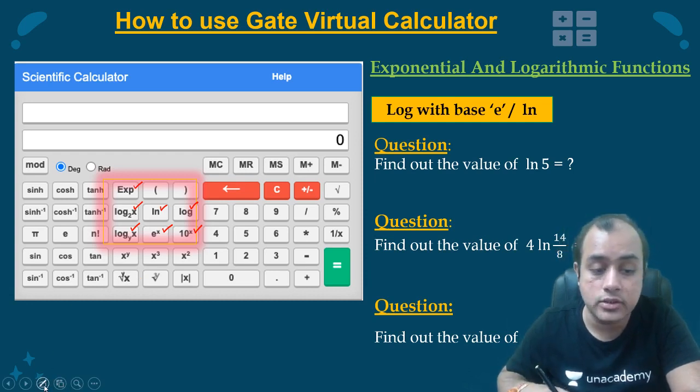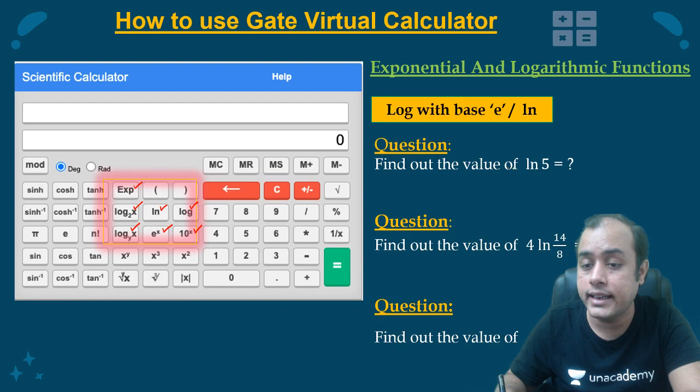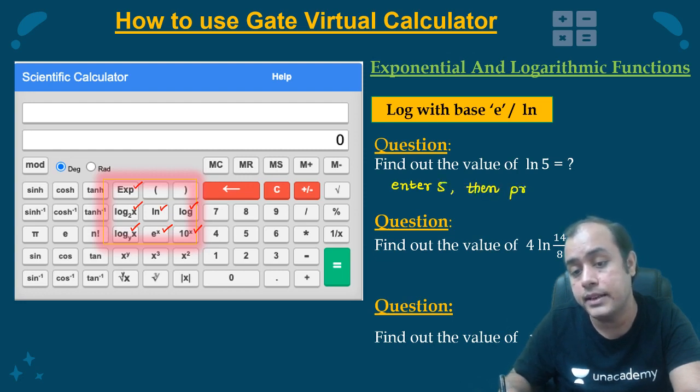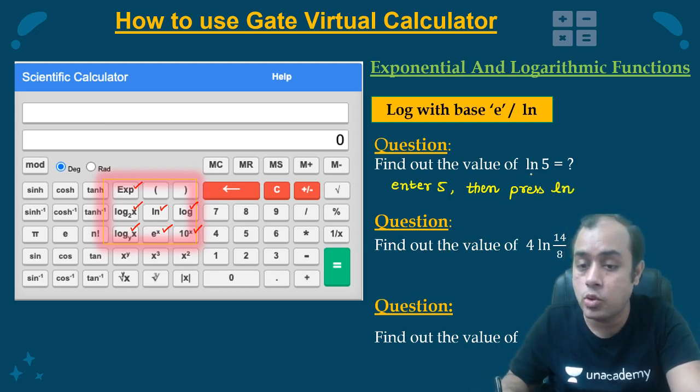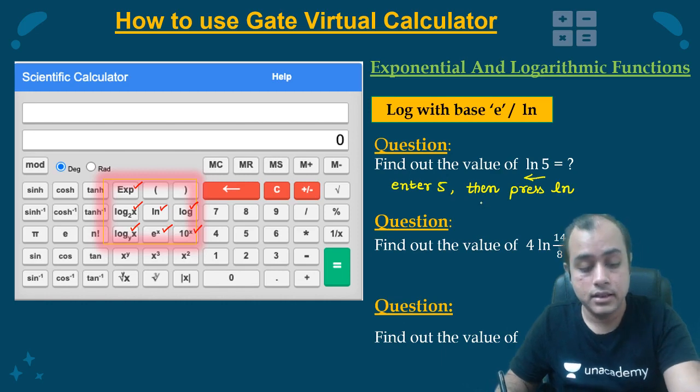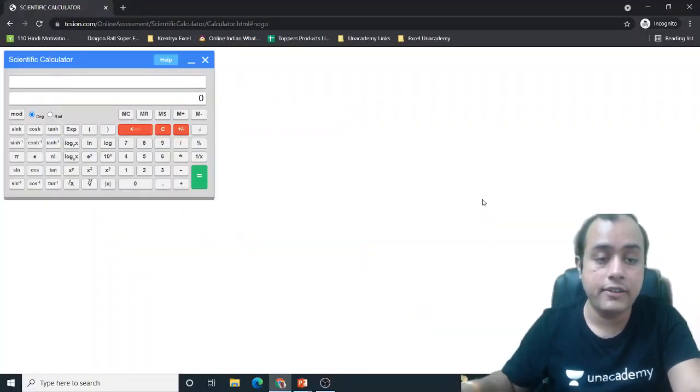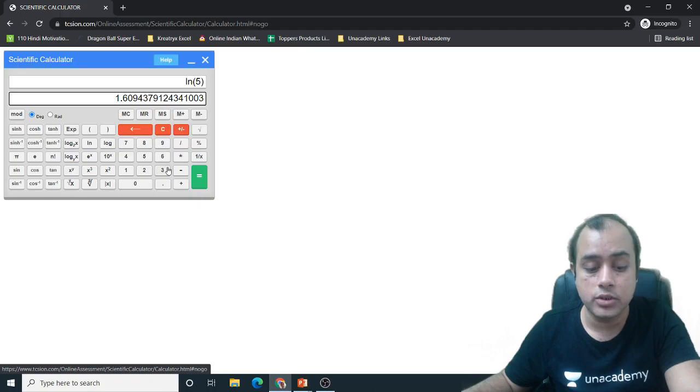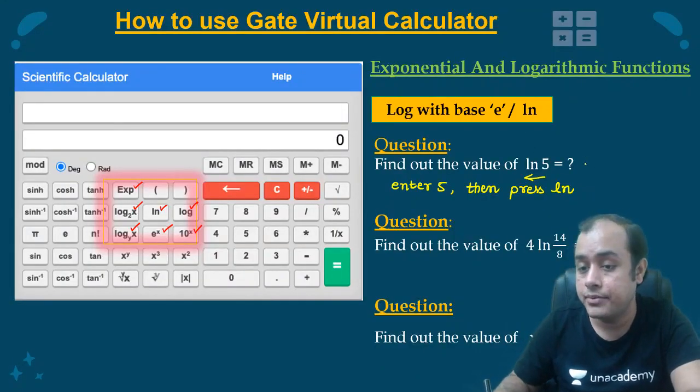Let us take these as questions. First thing is ln 5. So the process that you need to follow: you need to enter 5 and then press ln. Let me show you. First I will enter 5 equal to, then I will press ln. So 1.6094. It is coming out to be 1.6094.